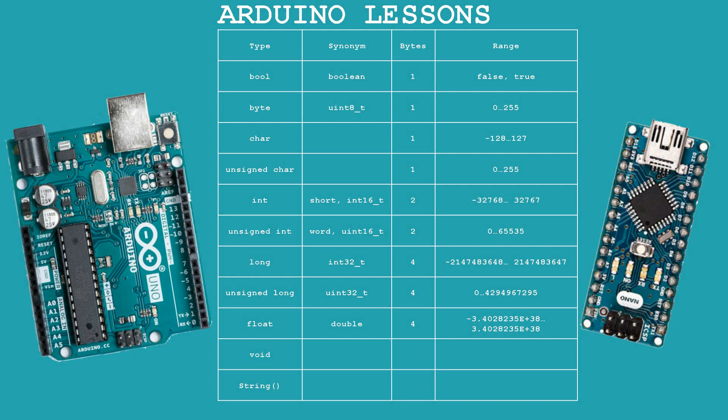Let's dive into the wilds of the Arduino rules of the stripped-down C language. I promise at the end of the lesson to highlight the most necessary types of created variables. Let's start parsing in order with the bool type.